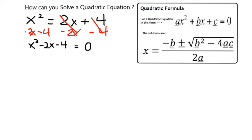Now that I have something in that form, I want to identify my a, b, and c. Because x squared doesn't have a coefficient, it's just like having a coefficient of 1. b is going to be negative 2 because I subtract 2x, and then c is minus 4.